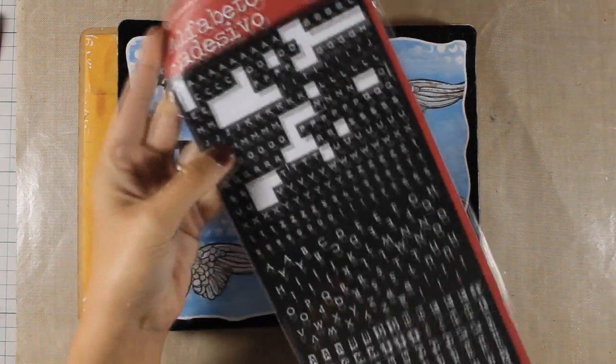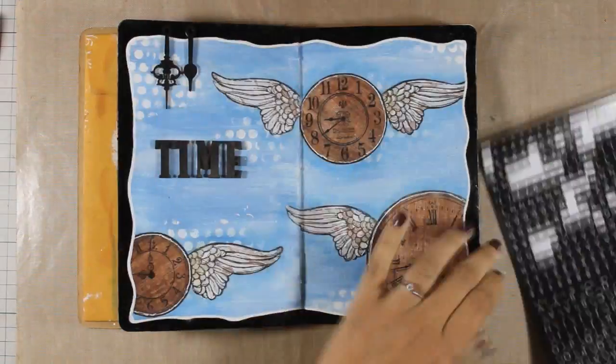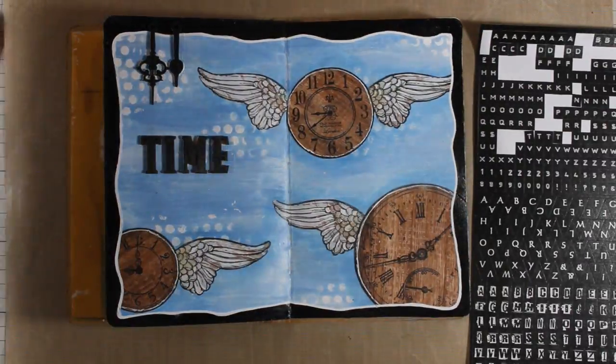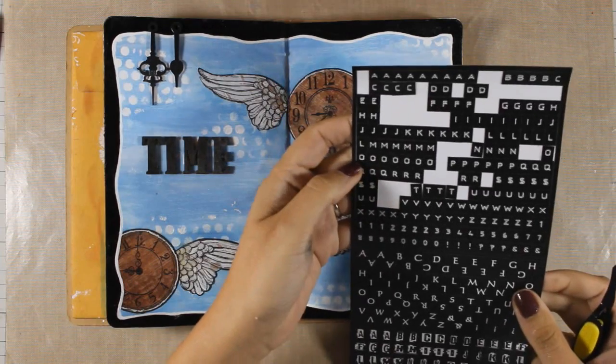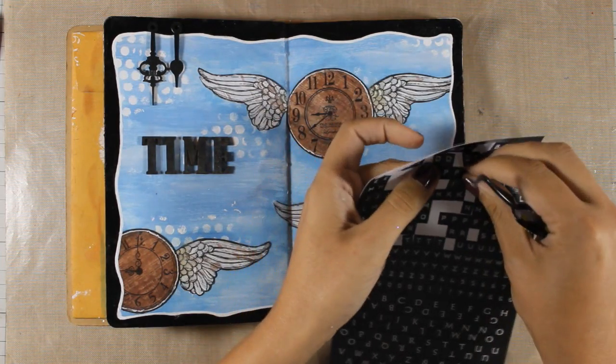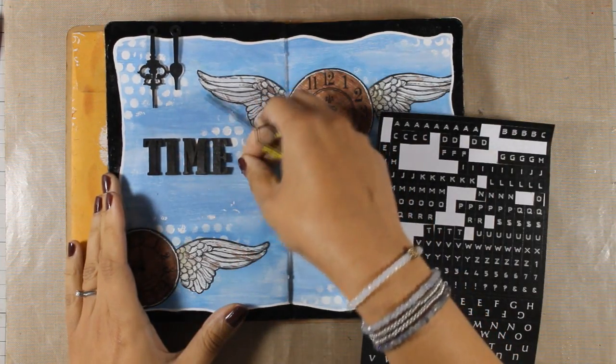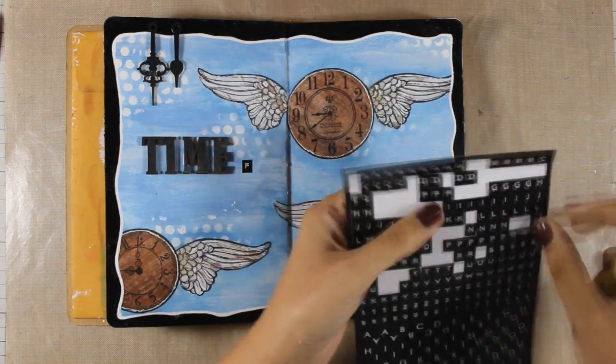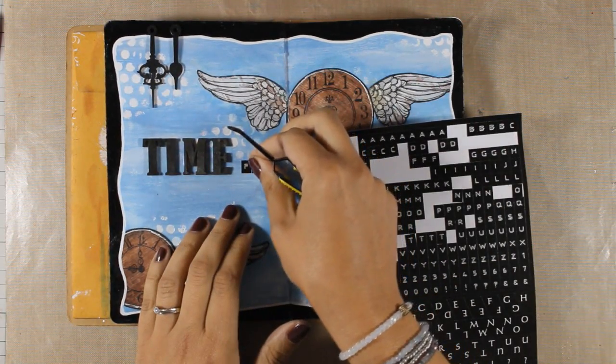Finally I am going to finish off my page by writing the whole quote which is going to say 'Time flies, make the most of it.' I am using those black alphabet stickers by Stamperia and I am also going to stamp the date with my black ink.